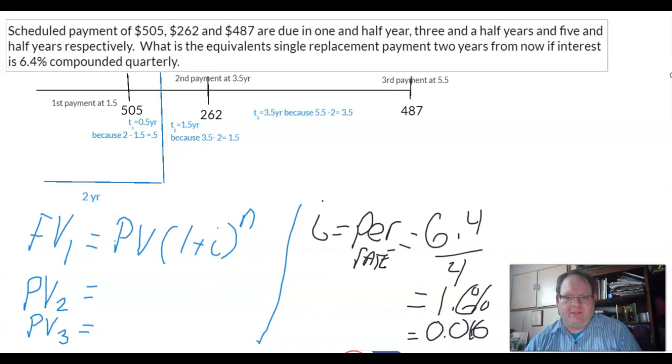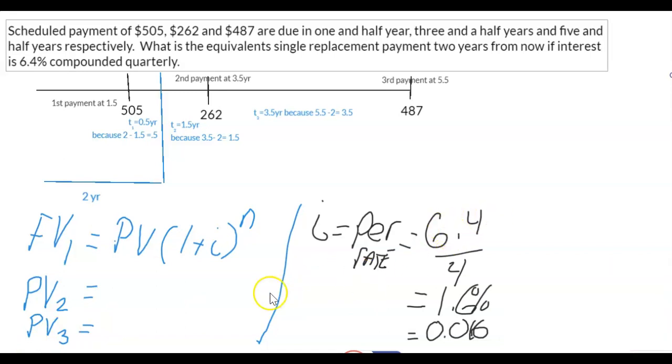Now I'm going to turn off my webcam. So I'm going to go away for a moment. Lucky you. We also have to deal with the n. Because there's three separate times, because there's three separate payments, we have three different n's. Let's first deal with n1.